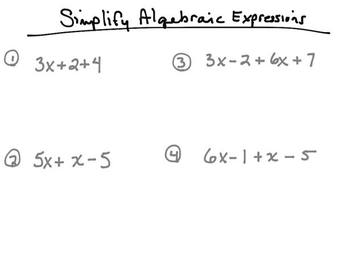To simplify, we're going to combine like terms — those are terms that are alike. Looking at number one, the like terms would be the two and the four. The reason these two are like terms is because neither one has a variable attached to it, so we're going to add them together. Two plus four gives us a positive six. The three x has nothing to add with it, so we bring it down. This simplifies to three x plus six.